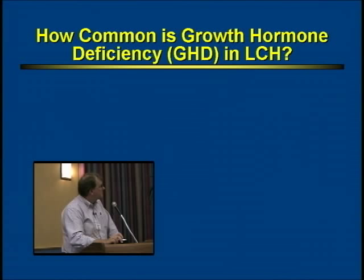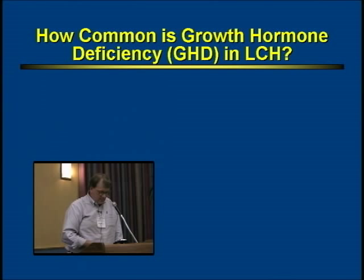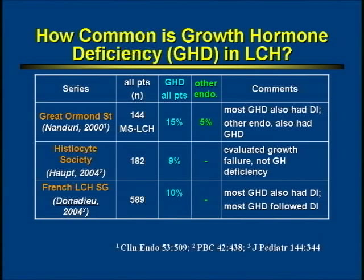Diabetes insipidus is the most common endocrine complication of LCH. Growth hormone deficiency is also seen. Three studies in the literature identified, looking at high-risk patients with multi-system disease or other surveys, an incidence of between 9% and 15%. Most of the patients who had growth hormone deficiency already had diabetes insipidus in each of these series, so they're usually linked. Thyroid failure or other endocrinopathies can also occur, but those are even less common.